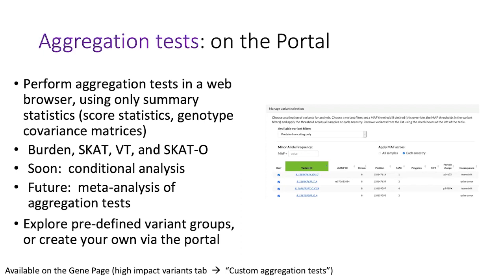This is also on the gene page. There's a high-impact variants tab — if you click on that and see the custom aggregation test button, you can try running all of these different tests.